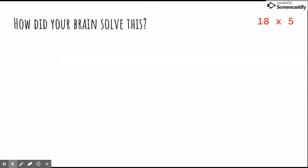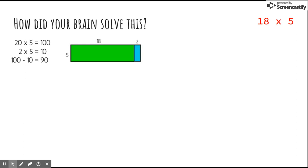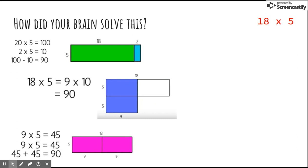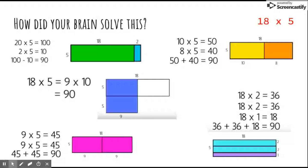How did your brain solve this? In class we want to focus on your strategy and not just the answer. Maybe your brain solved it in one of several ways. While there's only one right answer, there are multiple ways to get there. The possibilities are endless and there's no wrong strategy. There are a lot of creative ways to solve the same problem, which is a great lesson for our students to learn.